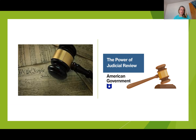Judicial review can be broken down into two different parts. First, having the power of judicial review means that the judicial branch can now say yes, this is going with what the Constitution says and it is constitutional, or no, this is going against what the Constitution says and it's unconstitutional. Marbury versus Madison was the first time that a law would be argued to be unconstitutional. The second part of judicial review is that the judicial branch would now have the power to interpret the law.